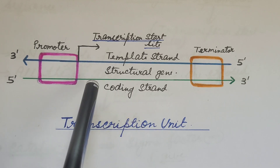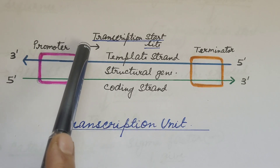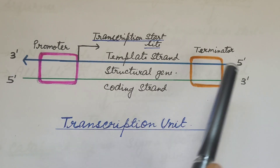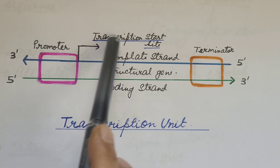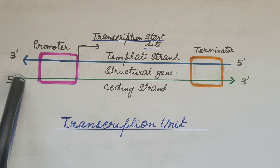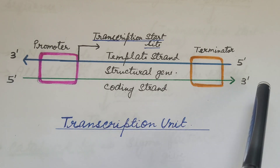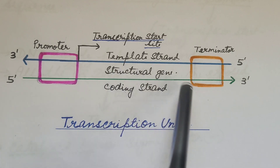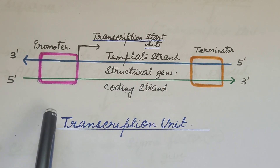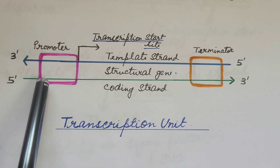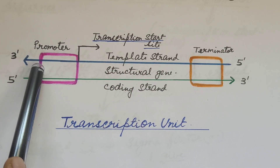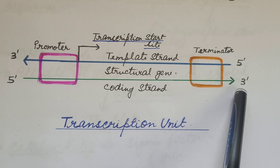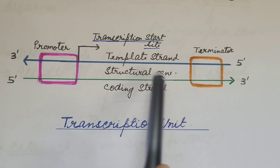Transcription is catalyzed by RNA polymerase, which synthesizes RNA in the 5' to 3' direction. So the strand having 3' to 5' polarity serves as the template strand, and the other strand with 5' to 3' polarity is displaced during transcription — this is known as the coding strand. With respect to the coding strand, the promoter is present at the 5' end or upstream, and the terminator is present at the 3' end or downstream of the coding strand.